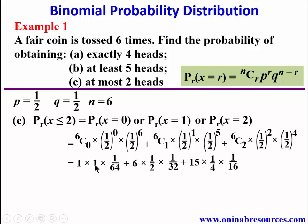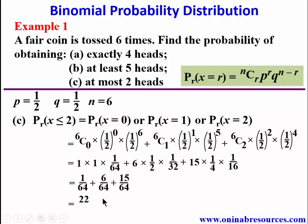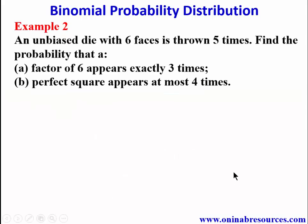This simplifies to 1/64 + 6/64 + 15/64. Adding: 1 + 6 + 15 = 22, giving 22/64, which in simplest form is 11/32. That is the probability of getting at most two heads when a coin is tossed six times.